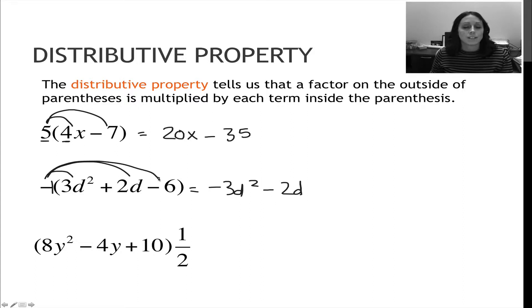Last one, negative 1 times negative 6. A negative times a negative is a positive 6. Again, if it helps you, you should keep flip change so you know it's a negative times a negative to get a positive.